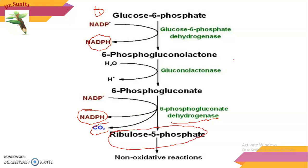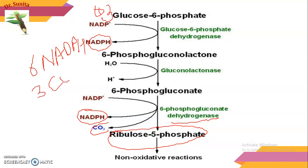The total reaction uses 3 molecules of glucose-6-phosphate, producing 6 NADPH, 3 CO2, and 3 ribulose-5-phosphate. This is the product of the oxidative phase of the pentose phosphate pathway.